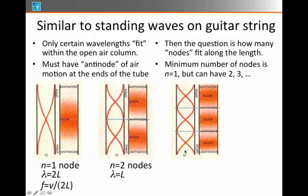The n equals 2 node case looks like it would have a wavelength equal to L, and its frequency then would be V over L. The n equals 3 case, if I do a little geometry here, that's one wavelength right there. So its wavelength is 2 thirds L, and then the frequency would be 3 times the speed of sound over 2L.